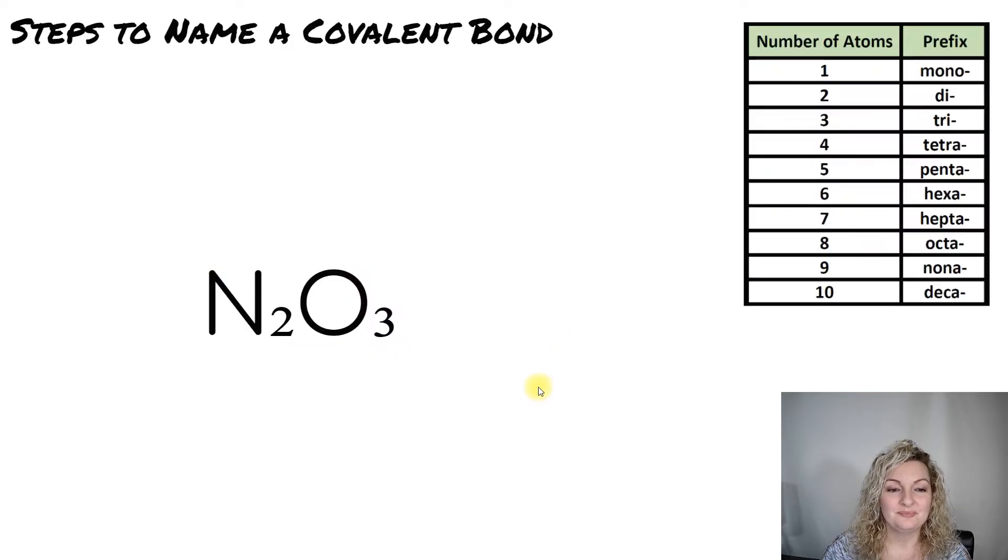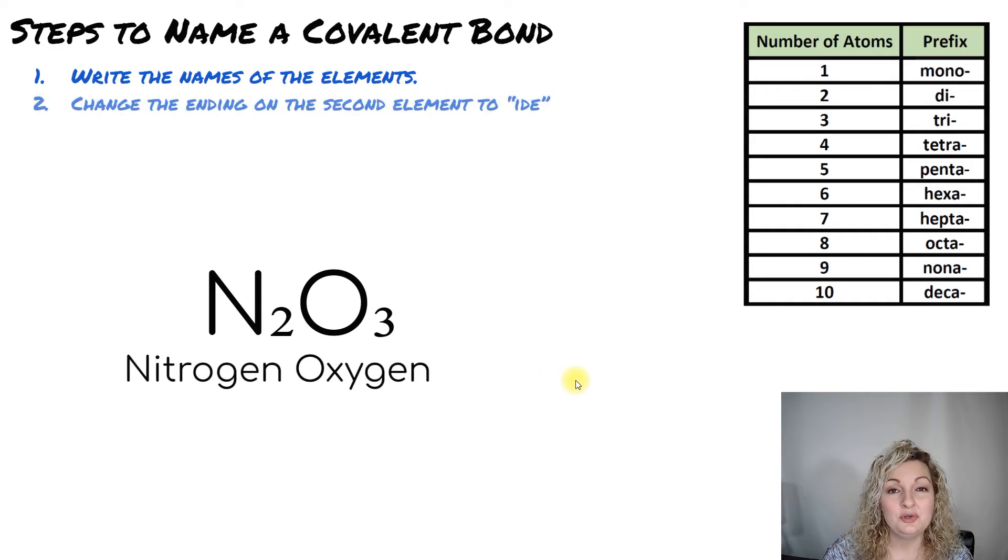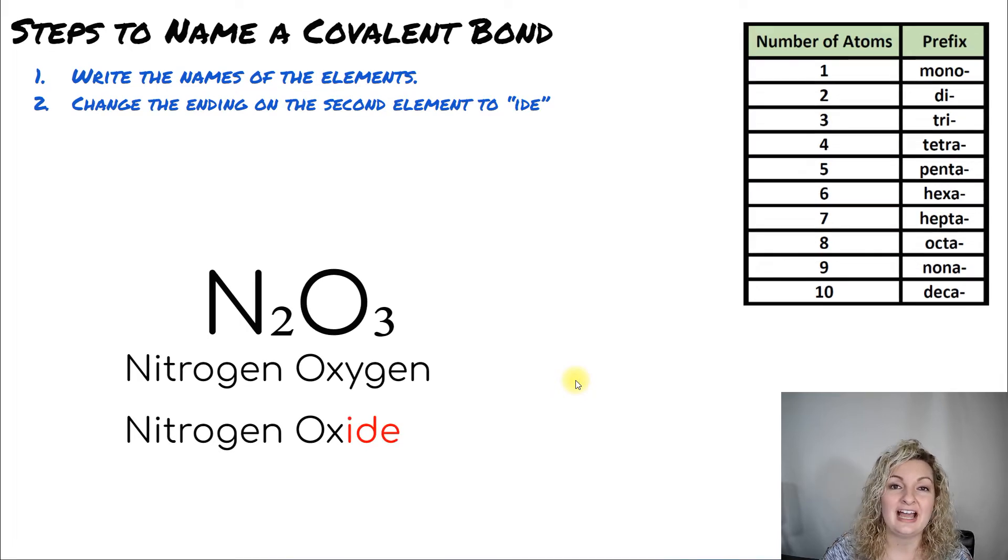Let's go ahead and try a practice problem. So we have N2O3. So our first step says, write the names of the elements. So nitrogen and oxygen. Step two, we're changing that second element to ide or the ide ending. As you can see, we changed it to oxide instead of oxygen.